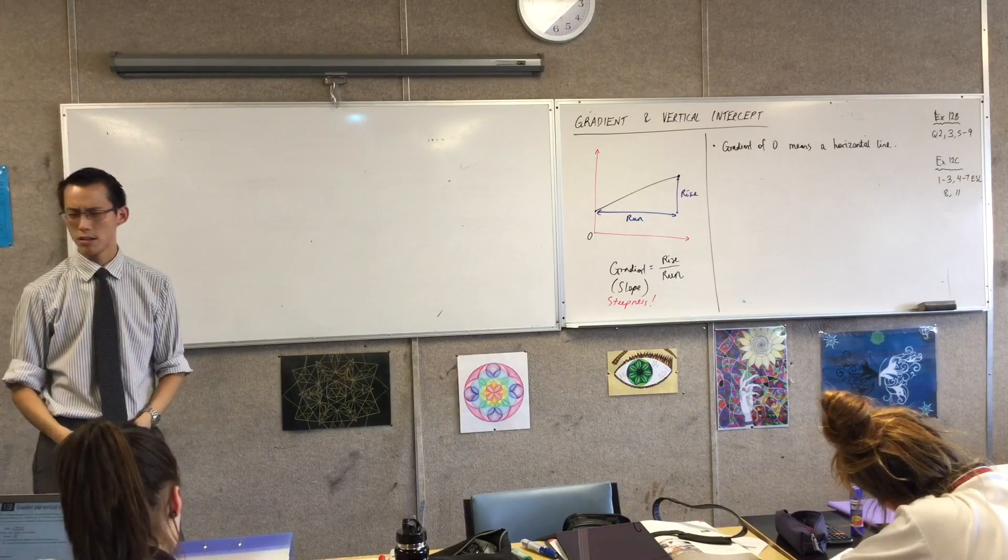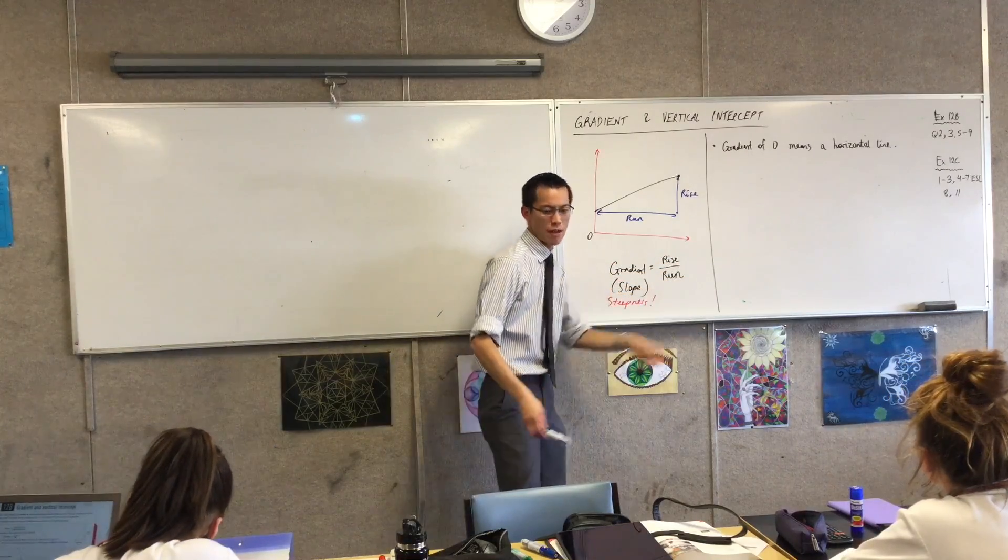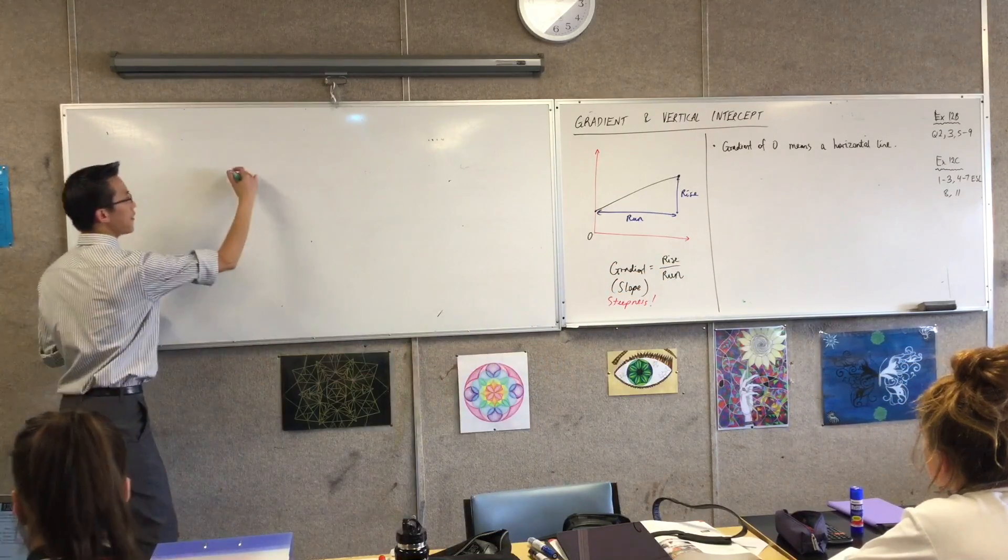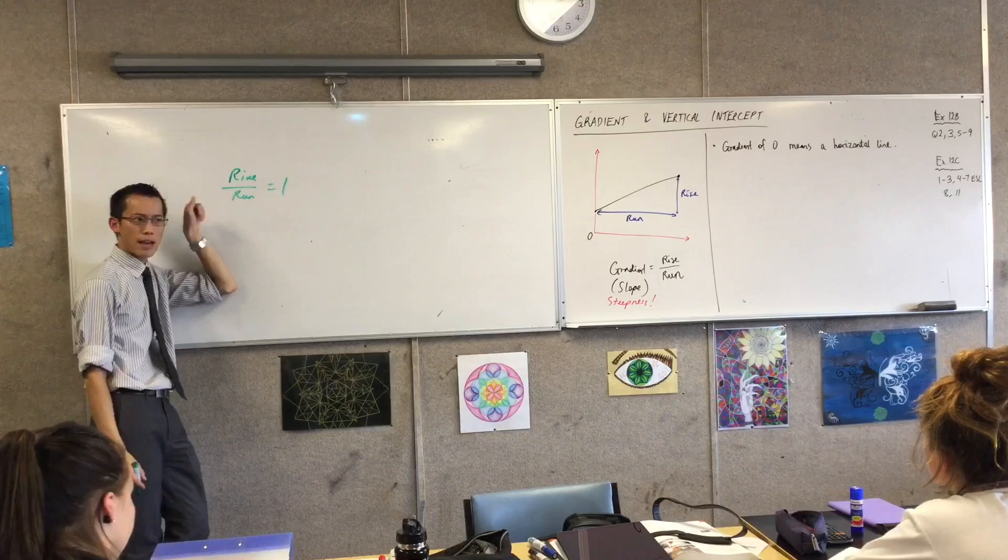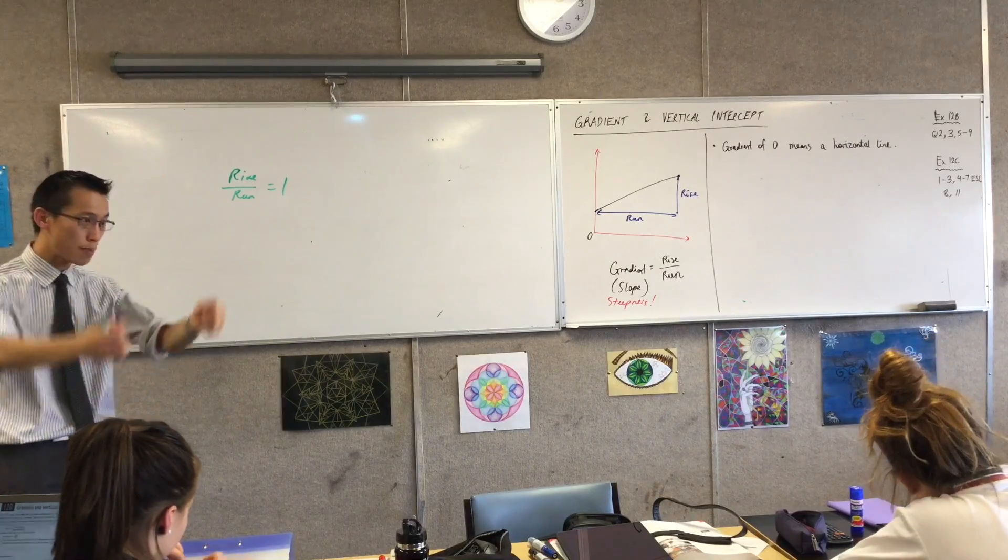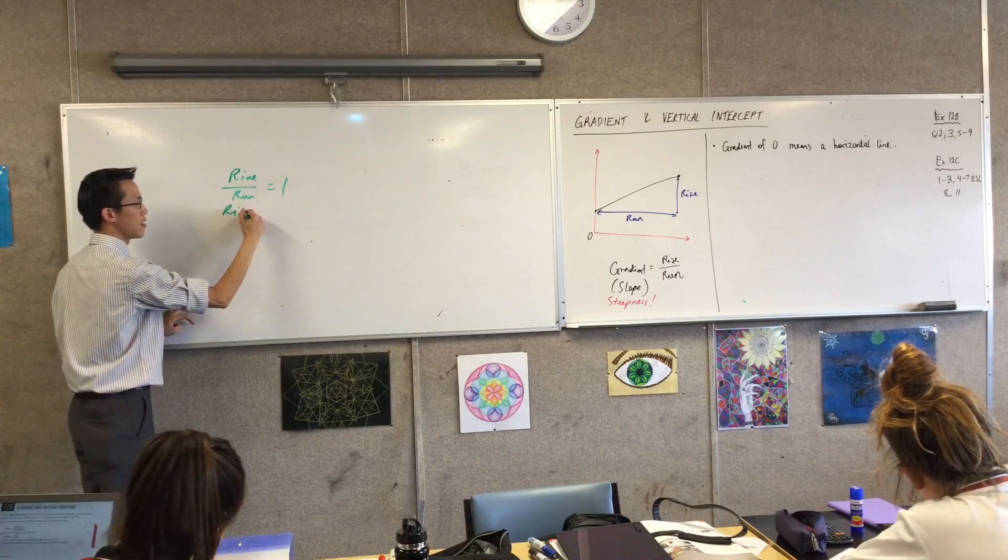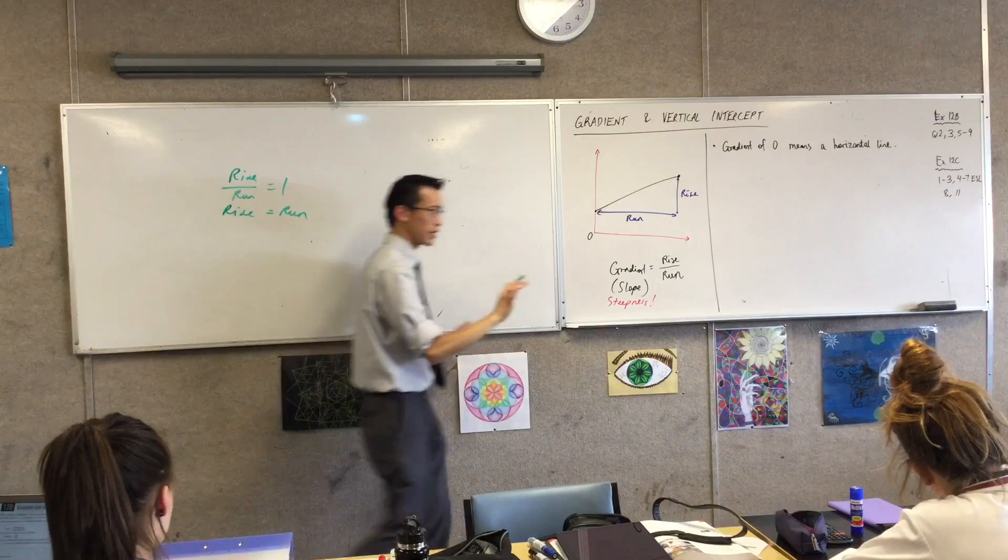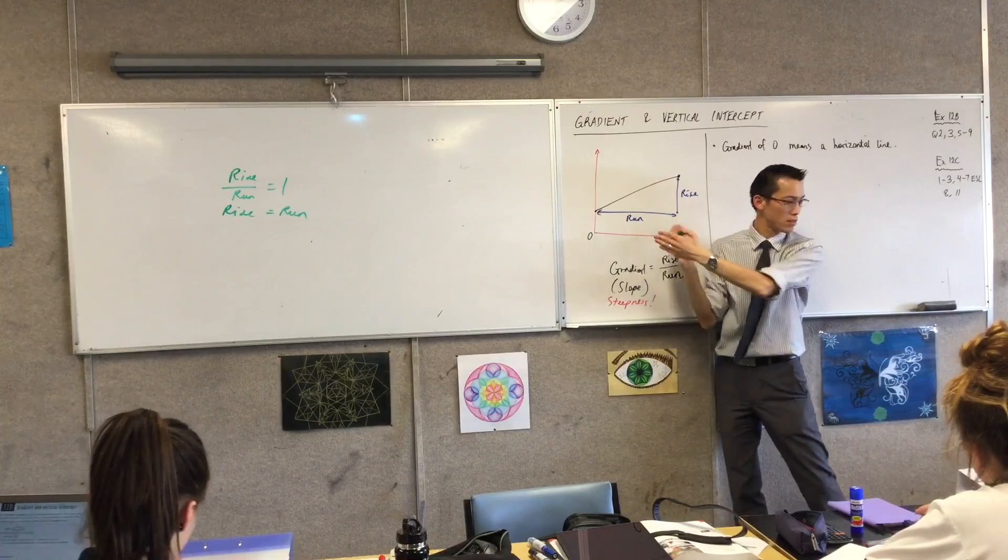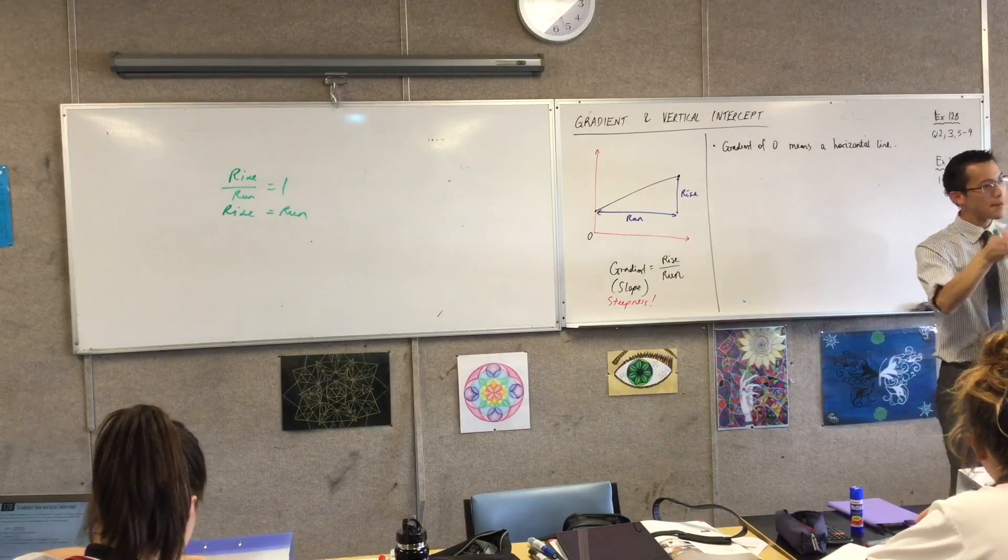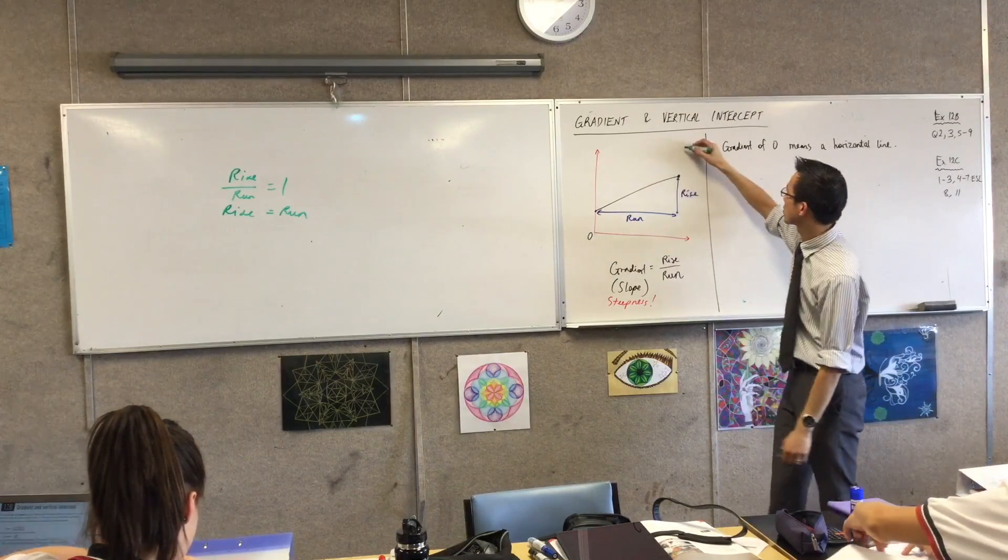What would a gradient of one look like? If I said rise over run was equal to one, what would that mean about the relationship between rise and run? Yeah, they're the same, right? And if you pull back your algebra skills, you can see I can just multiply both sides by this denominator. So a gradient of one would look like, take whatever distance your run is, and measure the same distance vertically. Make the rise the same.